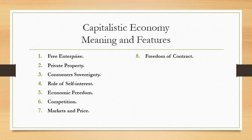Feature 5: Economic Freedom. The capitalist system is based on a number of economic freedoms. Individuals are free to consume whatever they like. Free choice of consumption determines the nature and volume of goods and services which should be produced. Similarly, business units are free to produce any product or service of their choice.